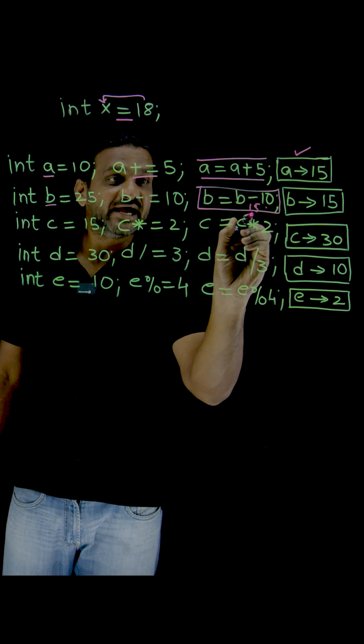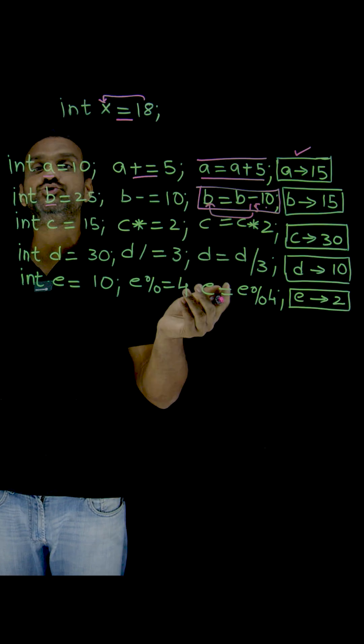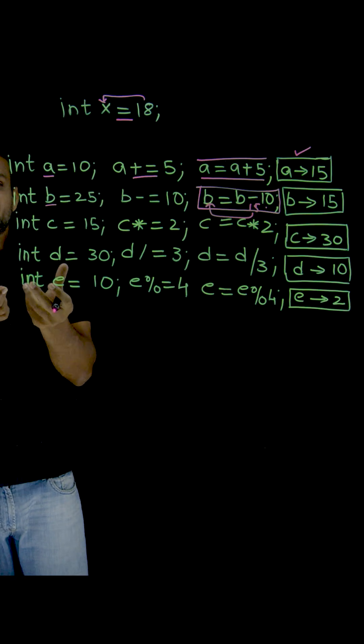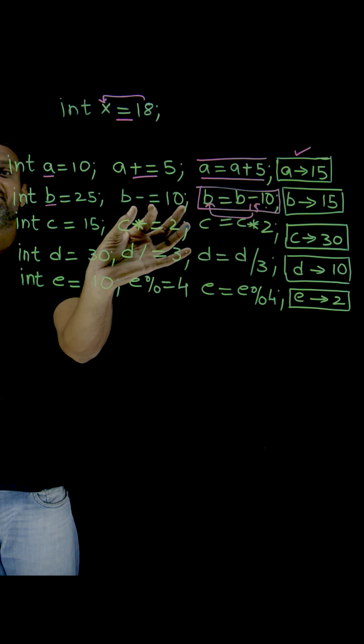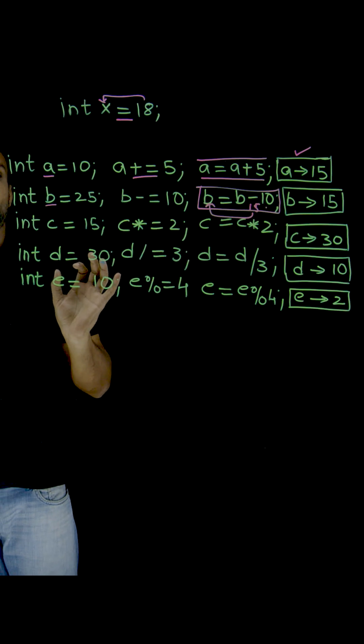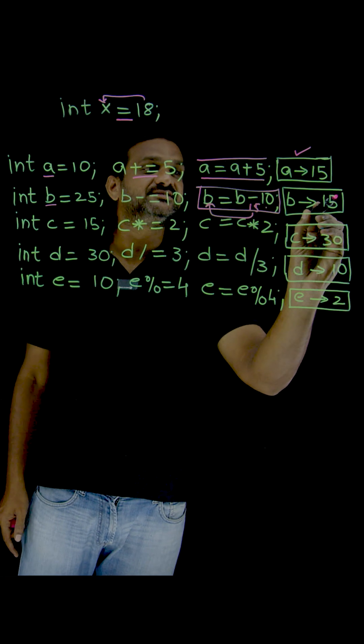...to b. So this is 15 and this 15 will be again assigned to b. The shorthand operator for this entire expression is minus equal to (-=). The new value for b is 15.